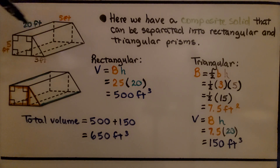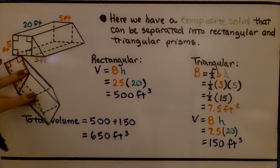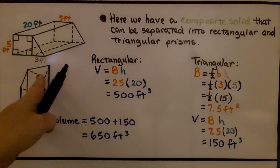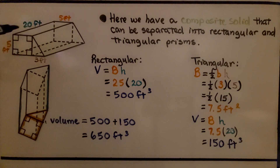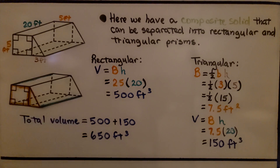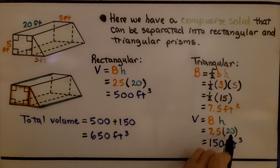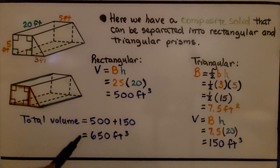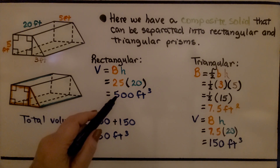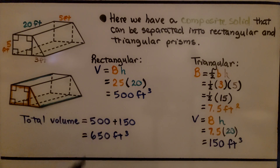We multiply the base area by the height. The height is twenty — if you look at this prism standing up, you'll see the height is twenty. Seven and five tenths times twenty, or seven and a half times twenty, is one hundred fifty feet cubed. We put the five hundred and the one fifty together for a total volume of six hundred fifty feet cubed, or six hundred fifty cubic feet.